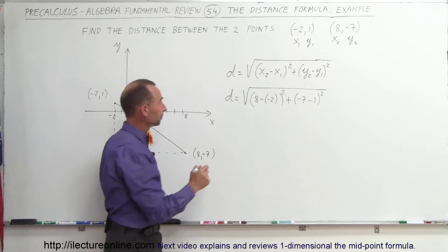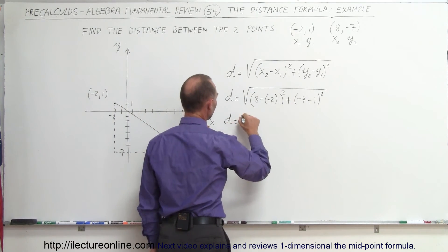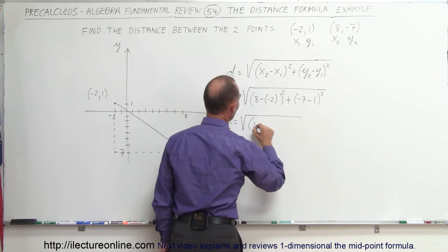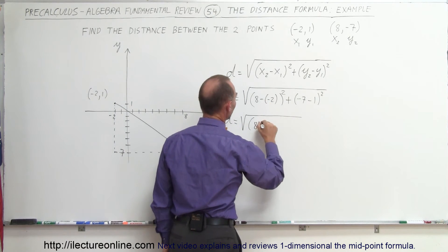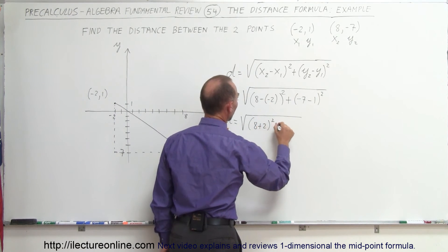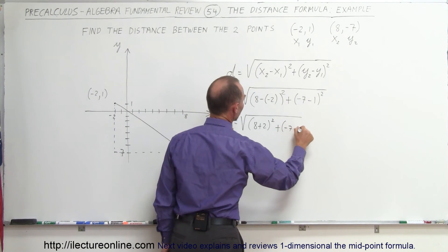Now we'll go ahead and simplify that. So the distance is equal to the square root of... So this is 8, minus times the minus is plus. We'll get 8 plus 2 squared, plus minus 7 minus 1 squared.